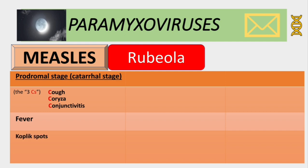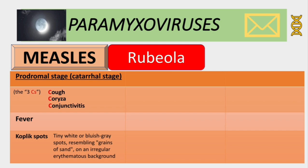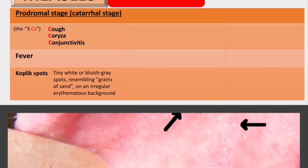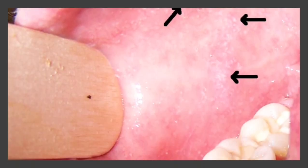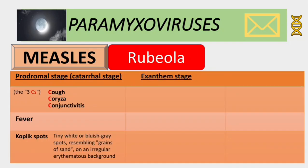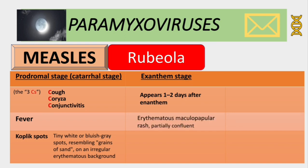The pathognomonic sign for measles is called Koplik's spots — tiny whitish or blue-gray spots on the buccal mucosa on a red background. The second stage is called the exanthem phase, or rash phase, and it appears one to two days after the enanthem. The enanthem refers to those Koplik's spots. It's an erythematous maculopapular rash, which is partially confluent.